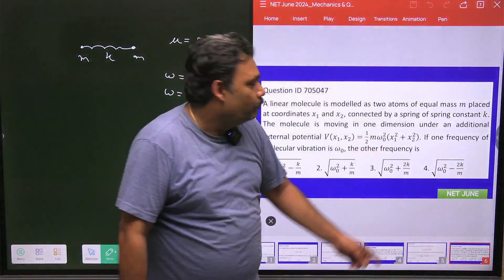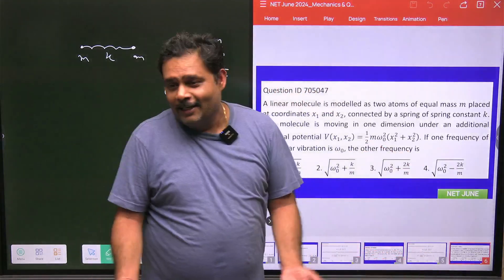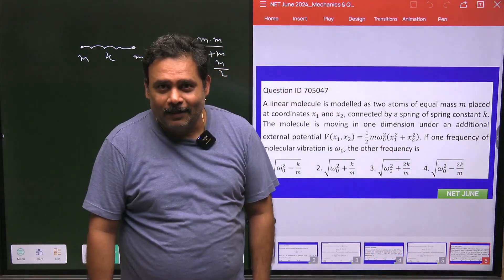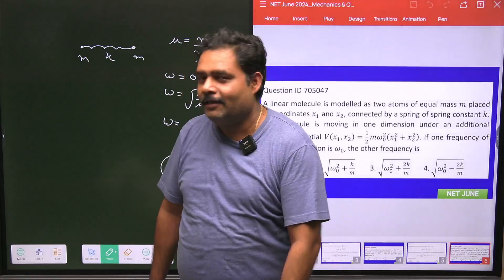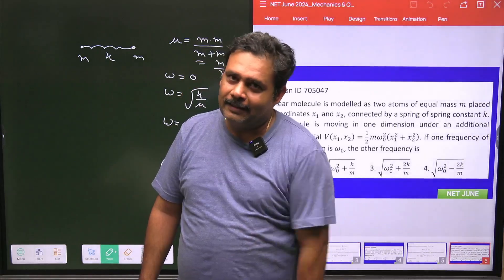Minus 2K by M, if I am putting ω₀, then this is really imaginary. Imaginary frequency cannot be possible. So obviously, the answer will be 3. This is a straightforward five-mark question and you can directly get this answer. Thank you.